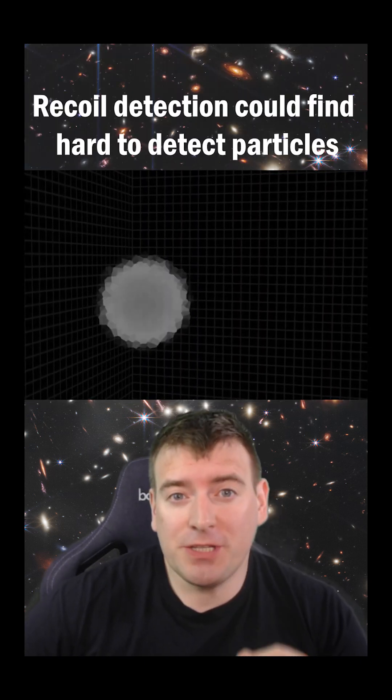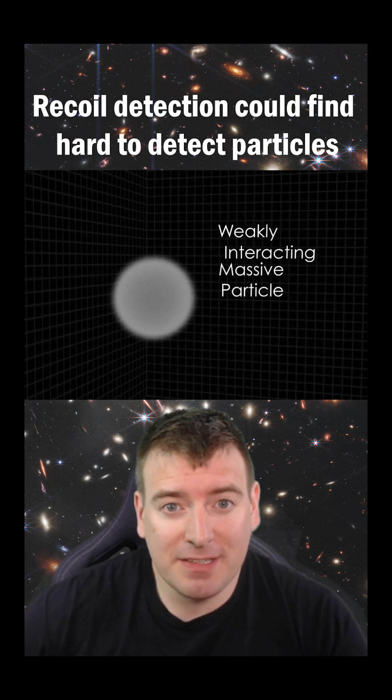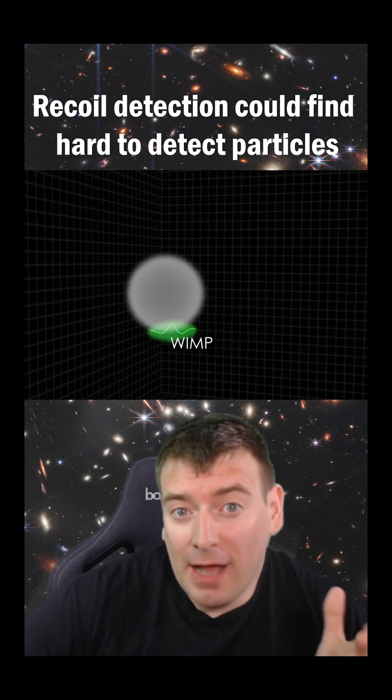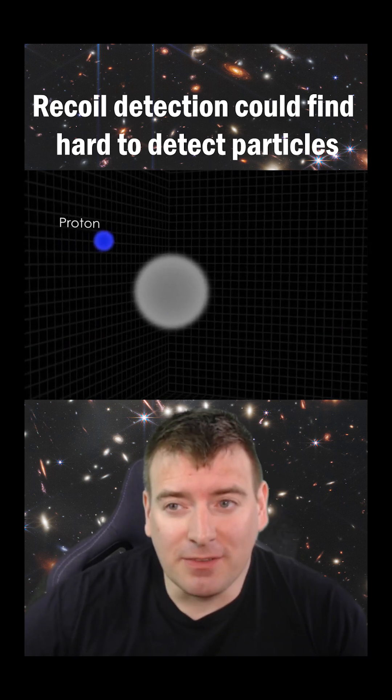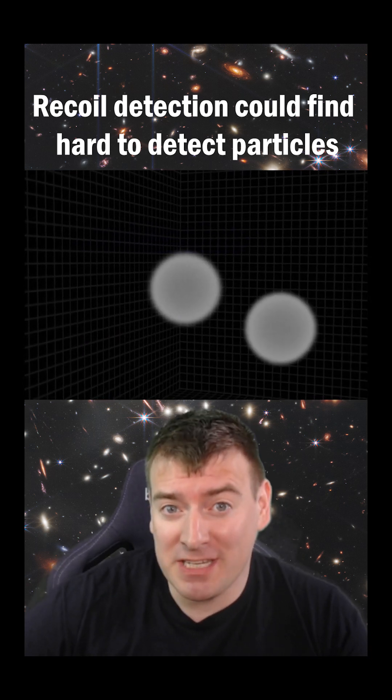Recoil-based detection could be used to capture particles that don't readily interact with conventional detectors, such as hypothetical dark matter candidates. If we see nuclei decaying and producing recoil signals, but we see no particles in nearby detectors, then we must be missing something.